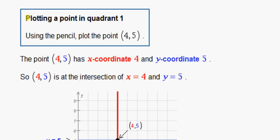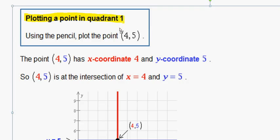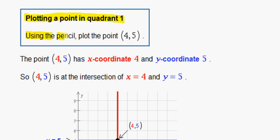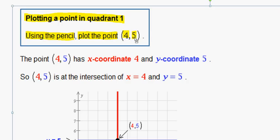In this problem we are plotting a point in quadrant 1. It's asking us, using the pencil, to plot the point (4,5).